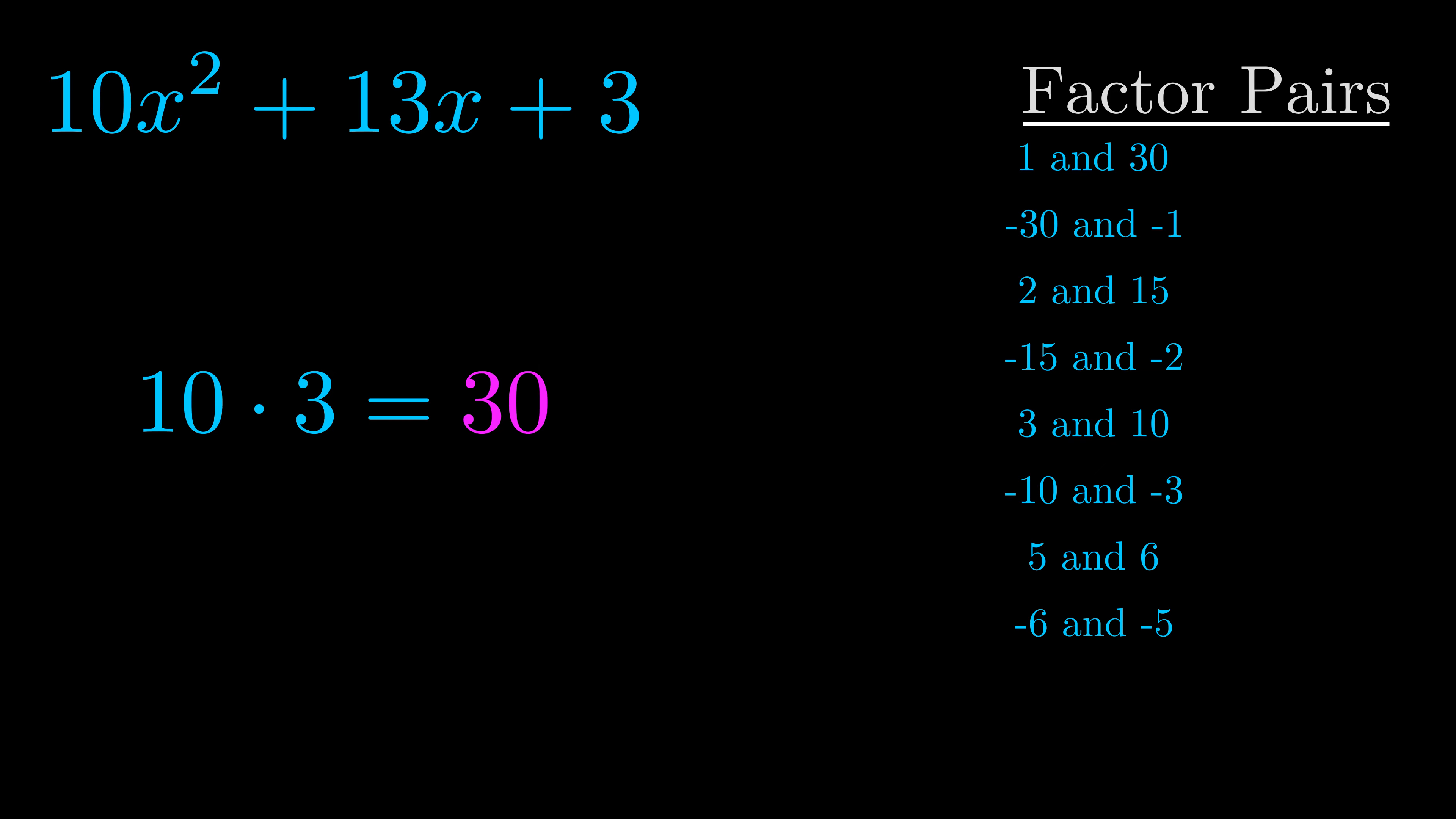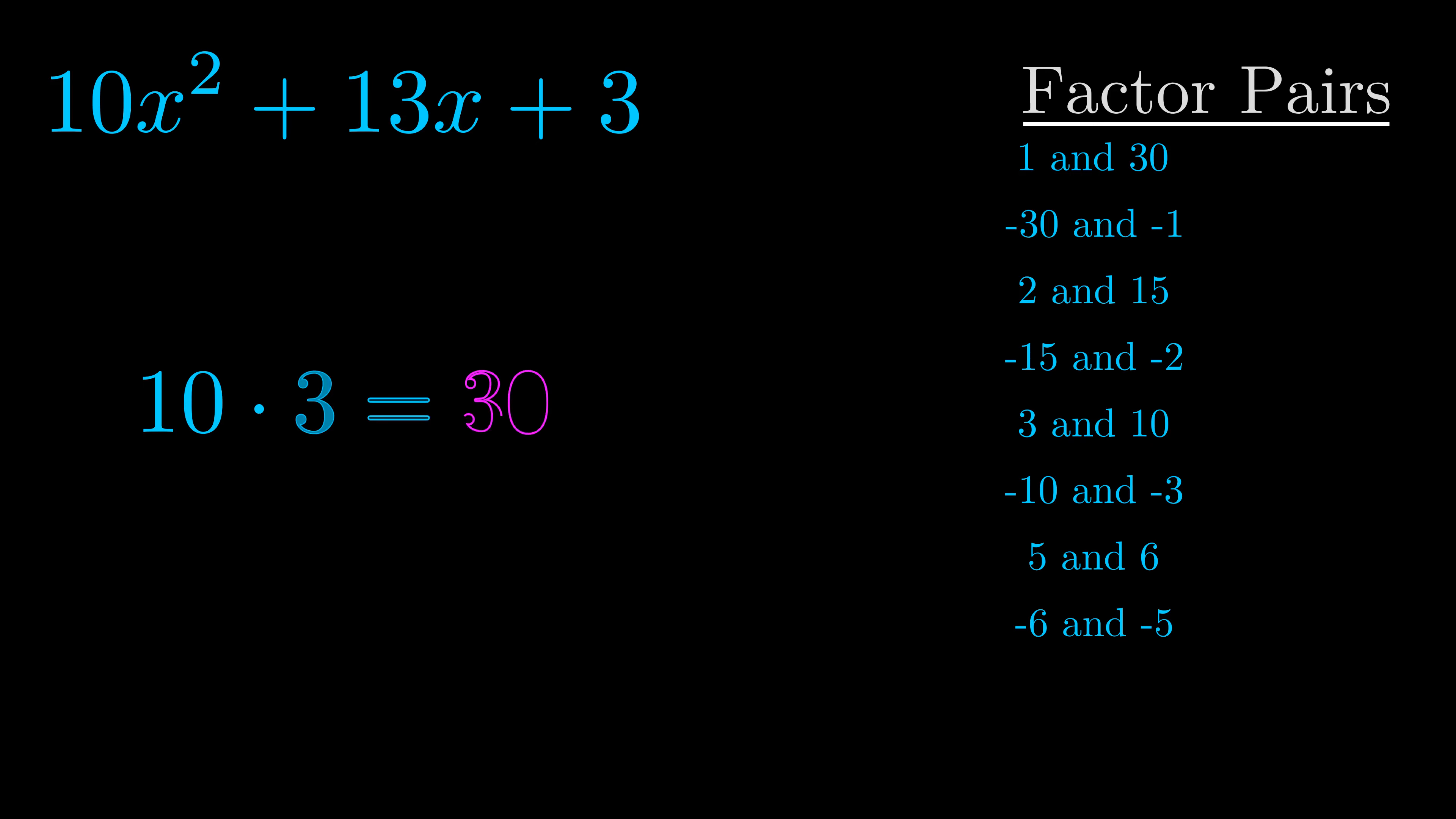Now once you have these factor pairs the goal is to find which of these pairs adds to the b value. The b value is the coefficient on the x term. That's the middle term, the one that we haven't done anything with yet. And really this is the only factor pair that we need.